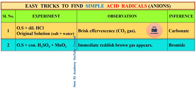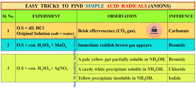The second test: original solution plus concentrated sulfuric acid, then add manganese dioxide. If we get an immediate reddish brown gas, we can identify that is bromide.